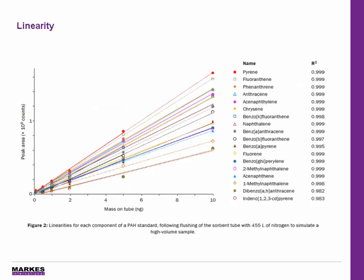As with all thermal desorption analysis, it's important to assess linearity. Linearities were calculated using five tubes loaded with the PAH standard at a range of 0.1 to 10 nanograms. The tubes were also flushed with 455 litres of nitrogen to simulate high-volume sampling, and the linearities were excellent — all R-squared values were found to be above 0.98.